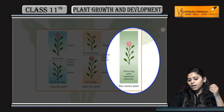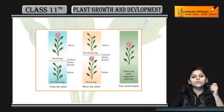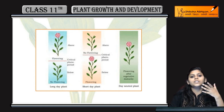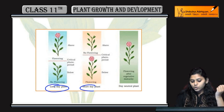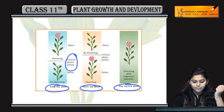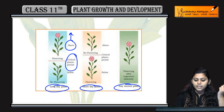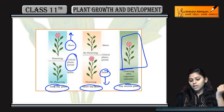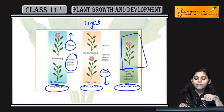वैसे ही day neutral plant है — flowering after vegetative maturity. इनका कोई correlation नहीं है — इन्हें exposure कितना मिल रहा है light या dark period का — बट इनकी vegetative maturity important है. तो ये था long day plant, short day plant and day neutral plant, जो depend करता है critical photoperiod पे. Long day plant के लिए exposure ज़्यादा होना चाहिए, short day के लिए कम होना चाहिए, और day neutral plant का कोई correlation नहीं होता between light exposure and flowering.